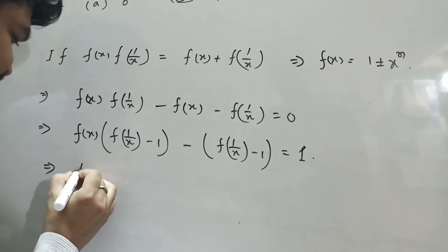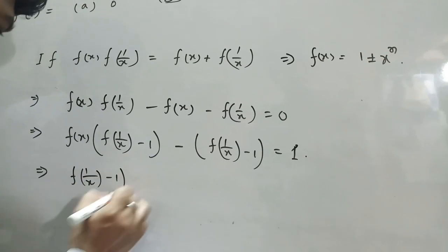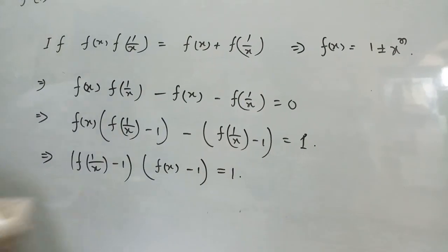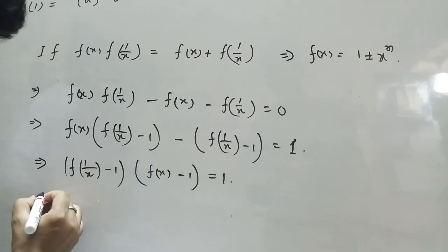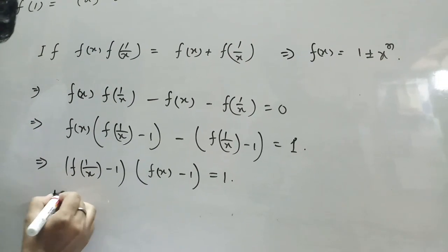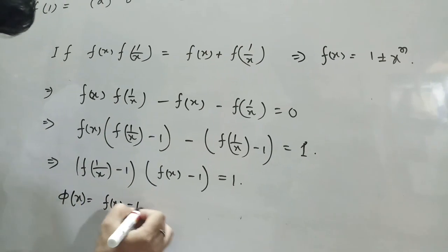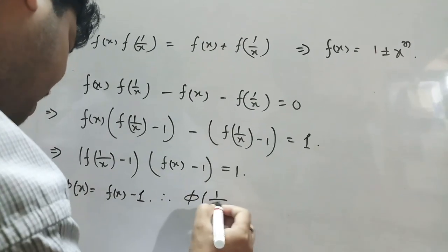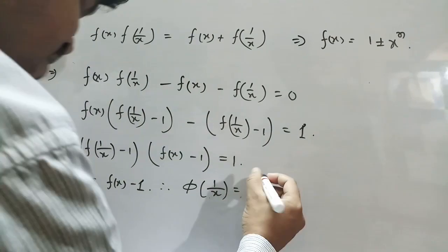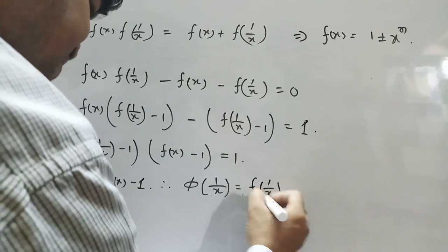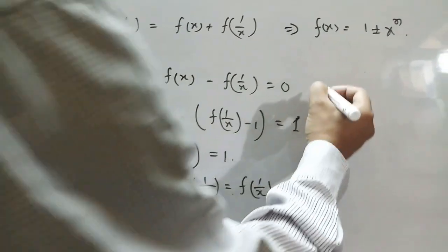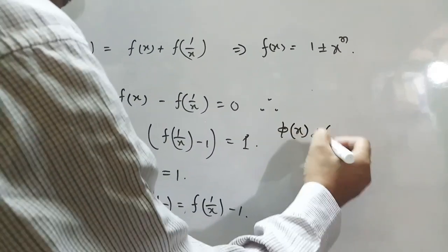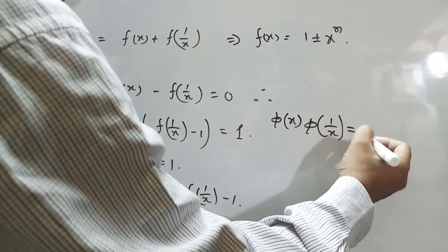Implies that f(1/x) minus 1 times f(x) minus 1 equals to 1. From this, if we put φ(x) is f(x) minus 1, then φ(1/x) equal to f(1/x) minus 1. Therefore,